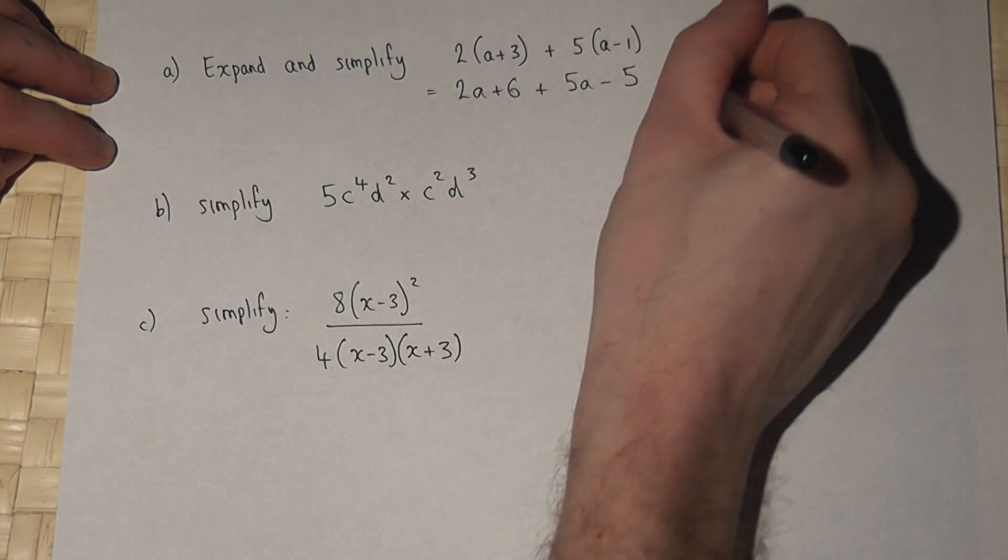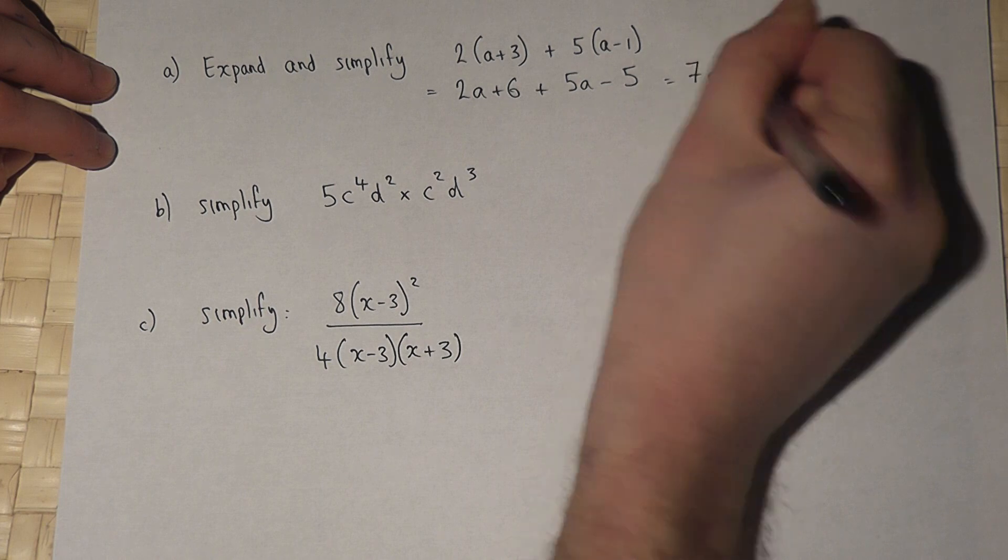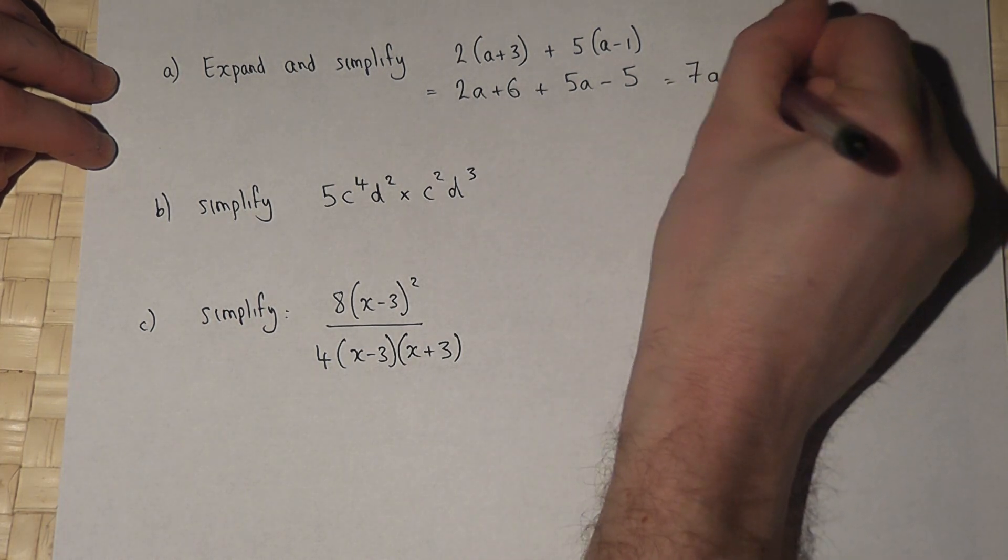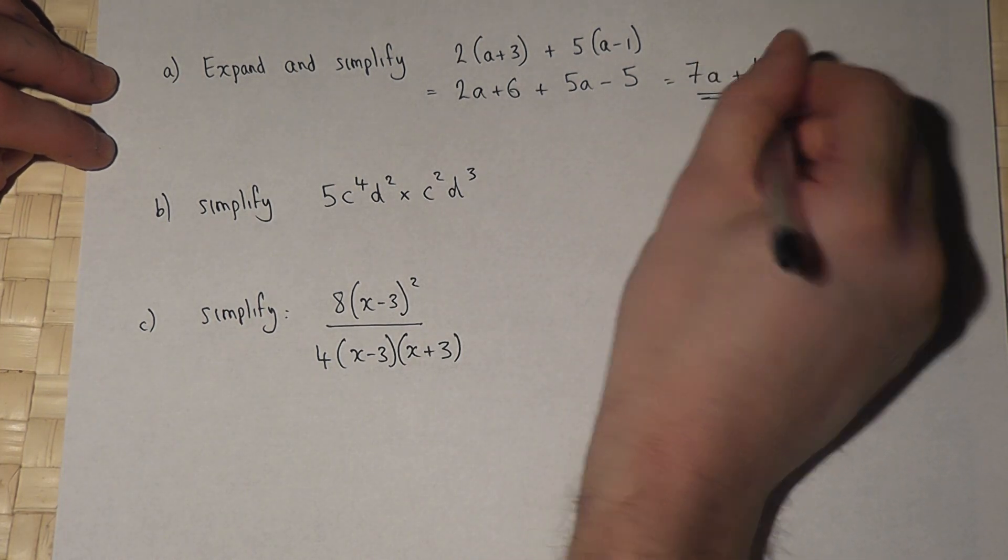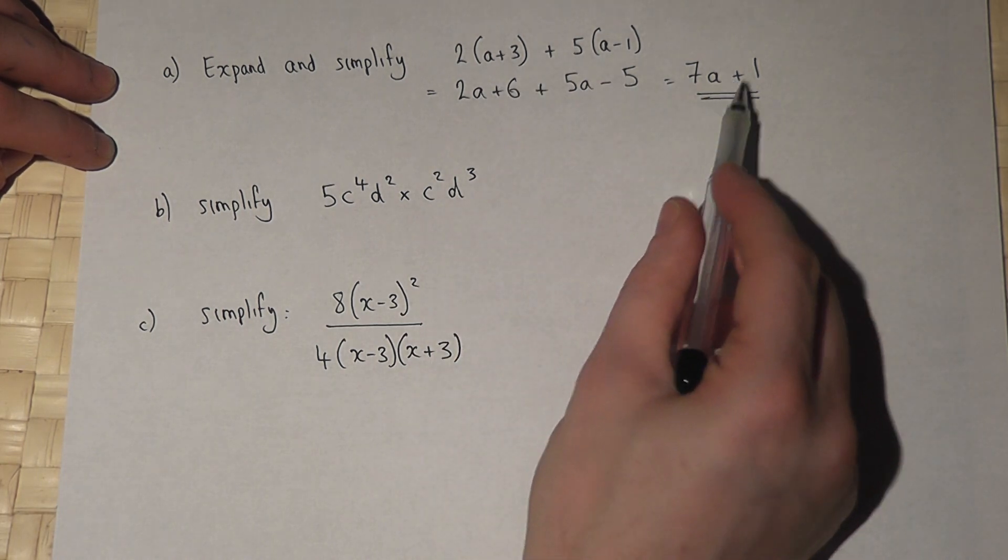Now 2a plus 5a is 7a, and 6 take away 5 is of course 1, so this becomes 7a plus 1.